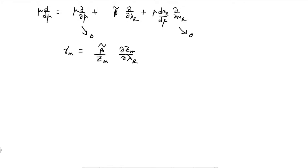Now I can take the derivative easily because everything is a function of lambda_r and epsilon. So I can take a derivative with respect to lambda_r. You can replace this by a total derivative because zm depends only on lambda_r and there is no other variable.